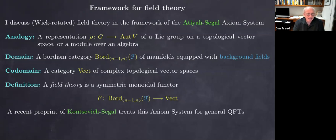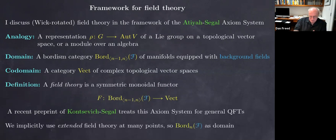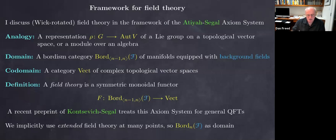This is most developed in the case of topological field theories and then in conformal field theories. There is a recent preprint of Kontsevich and Segal which talks about these axioms for general quantum field theories. Field theories are local and unitary — those are the two pillars of field theory. Unitarity is not in this definition, though we could put it in. If we want full locality, then we have to allow ourselves to have manifolds with corners all the way down so we can do higher codimension gluing.